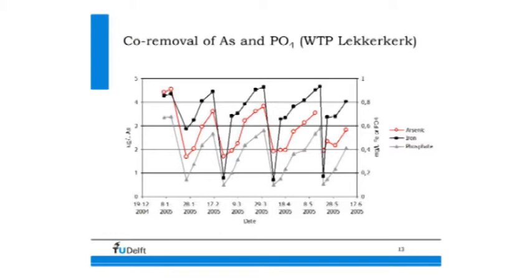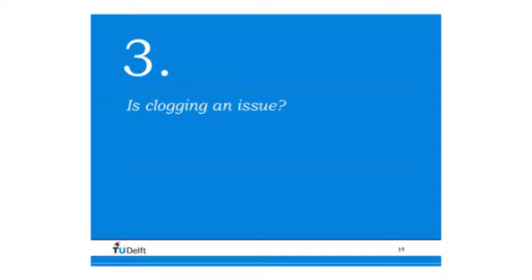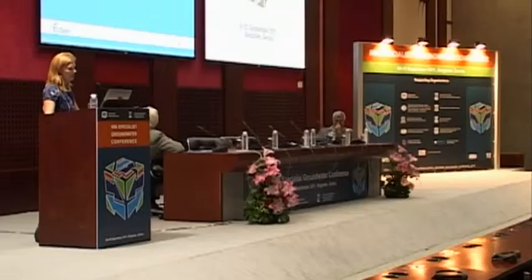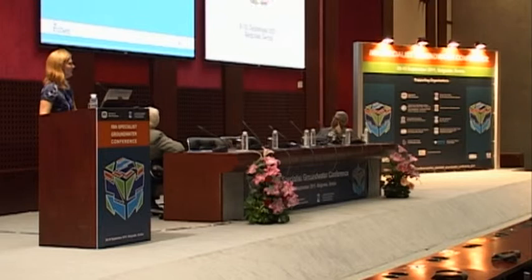We also saw that not just iron is being removed. The same cycle trend we see for iron — low just after injection, rising during abstraction — we observed for arsenic and phosphate as well. This led us to pursue arsenic removal. But a question I always received at the start of my PhD was: what happens in the ground? Is it sustainable? Does it clog the aquifer or the well? Can it be used long-term?